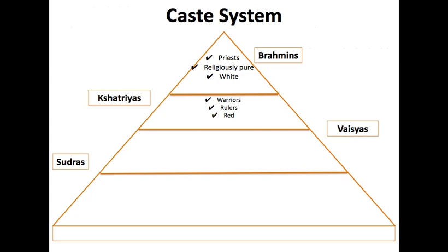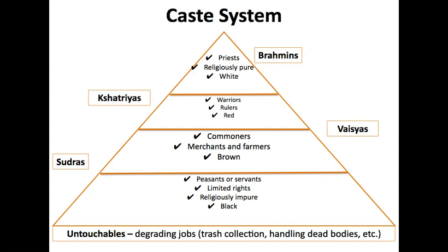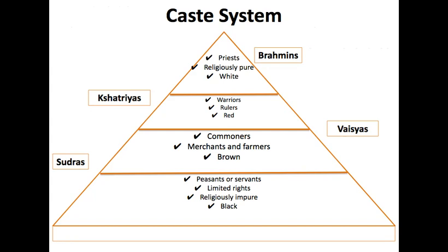At the top of the caste system are the Brahmins — the religious leaders, considered pure, associated with the color white. Being born into the Brahmin level means you led a very good life in your previous life. Next are the Kshatriyas — the warrior class, including rulers, associated with the color red. These first two classes have a lot of privileges and freedoms. Then you've got the Vaishyas — commoners, merchants, farmers — associated with the color brown, like working with the earth. They have limited access to wealth but are still respected. Then there are the Shudras at the bottom — peasants and servants — with limited rights, considered religiously impure, and associated with the color black. Obviously wealth comes into play here too — a priest is much more comfortable and wealthy than a peasant or servant.